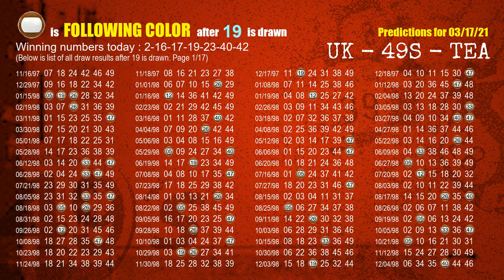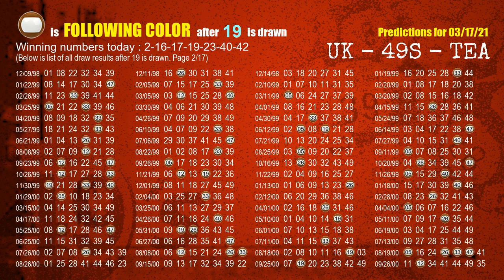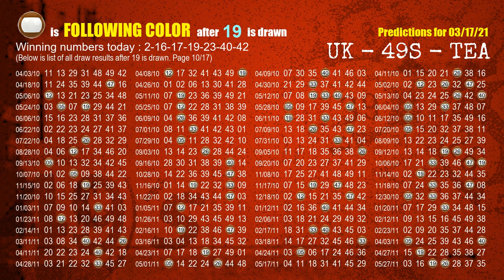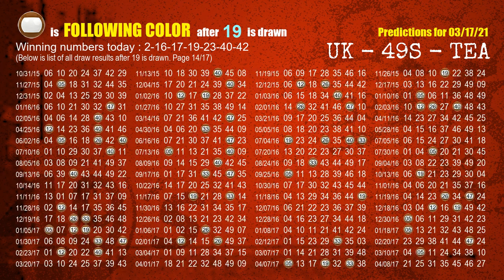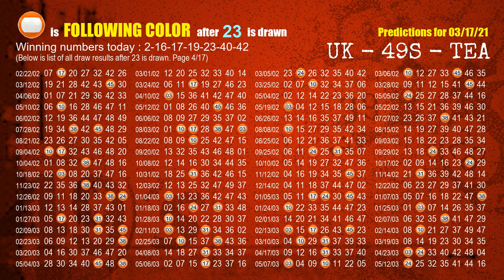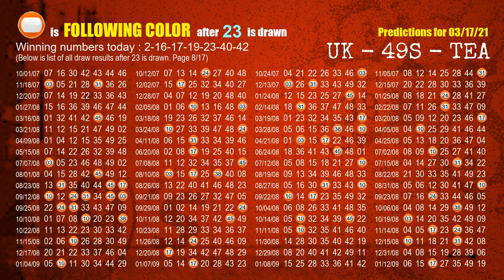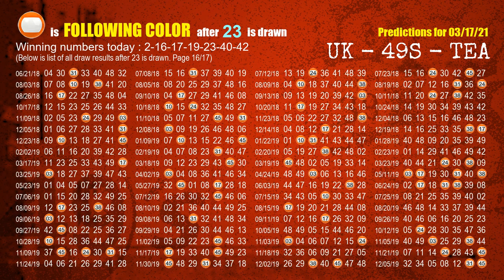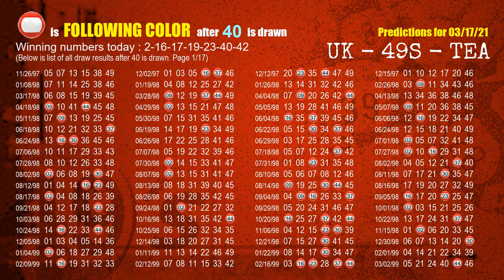The fourth winning number is 19. The most frequently following color is brown when 19 is the winning number in the last draw. The fifth winning number is 23. The most frequently following color is orange when 23 is the winning number in the last draw. The sixth winning number is 40. The most frequently following color is red when 40 is the winning number in the last draw.